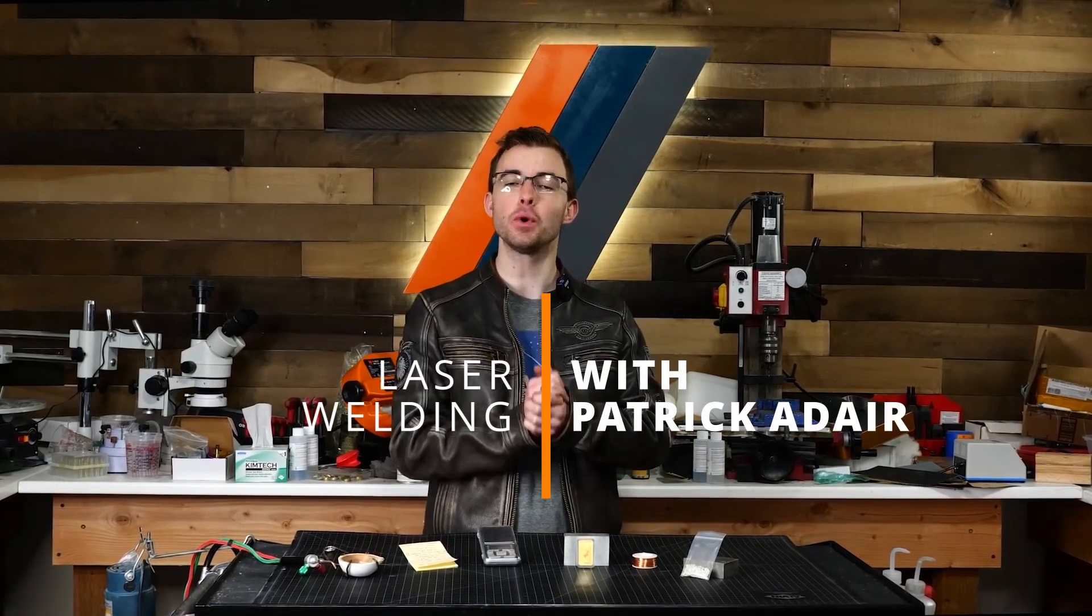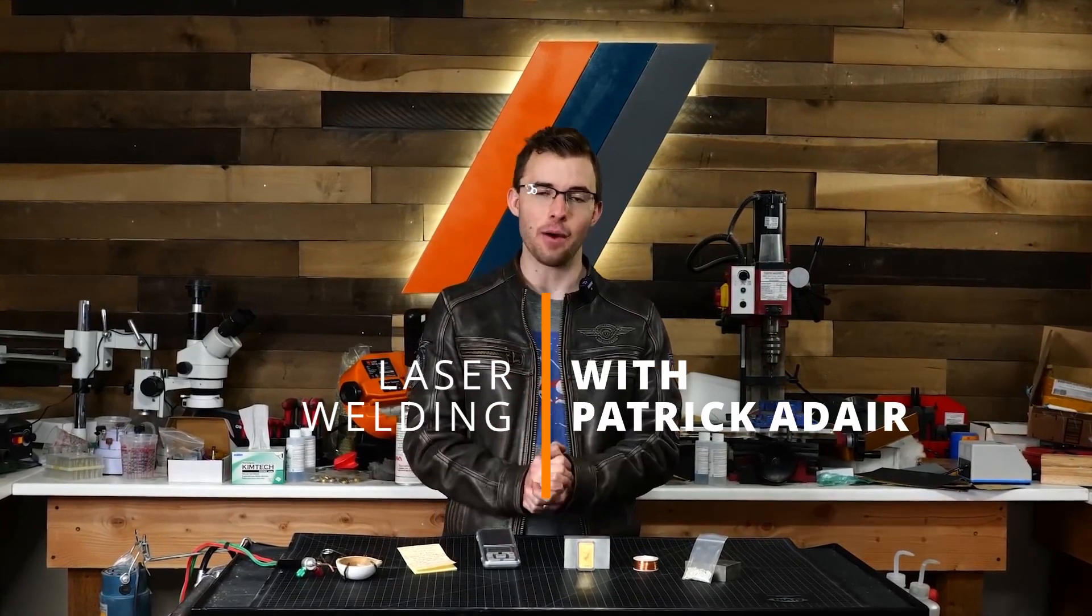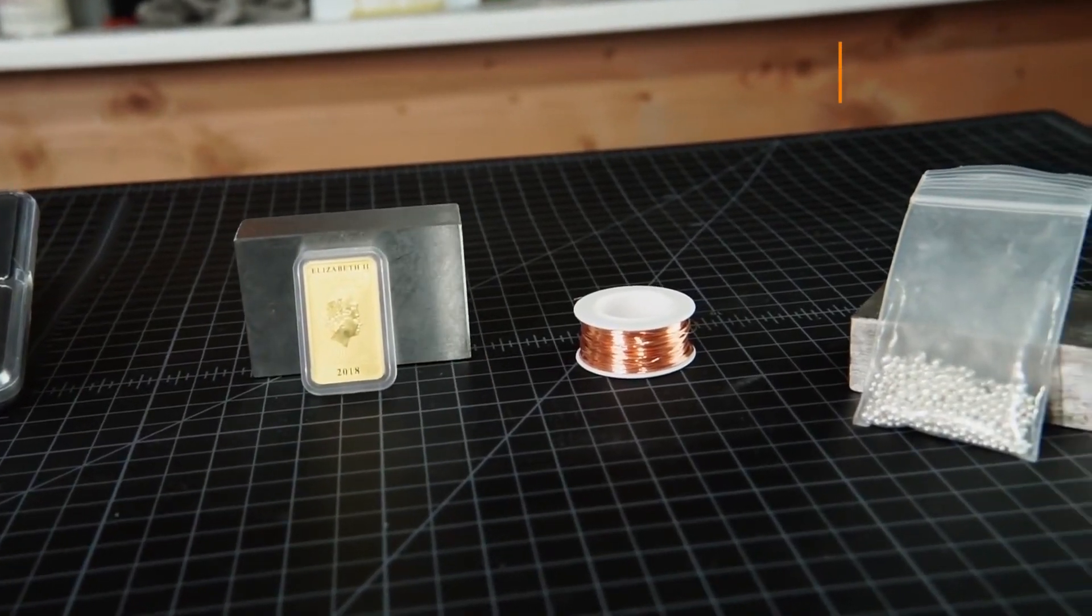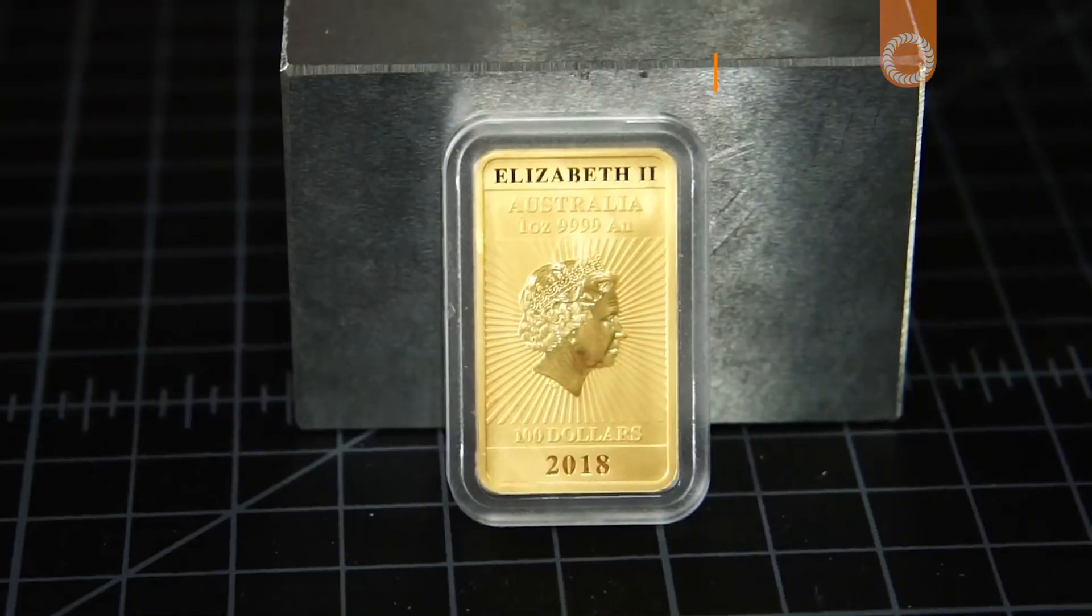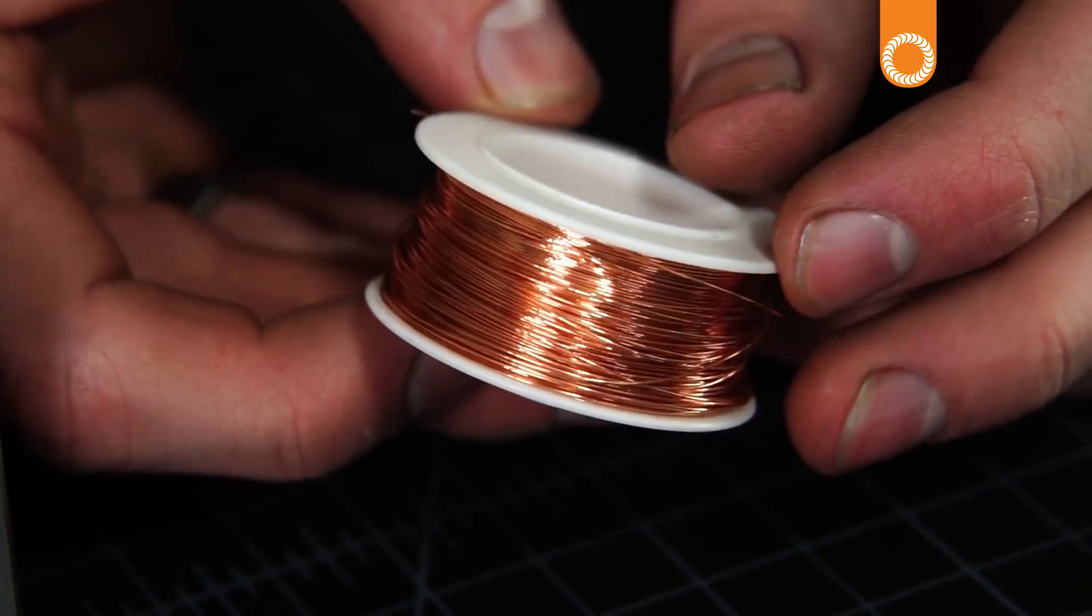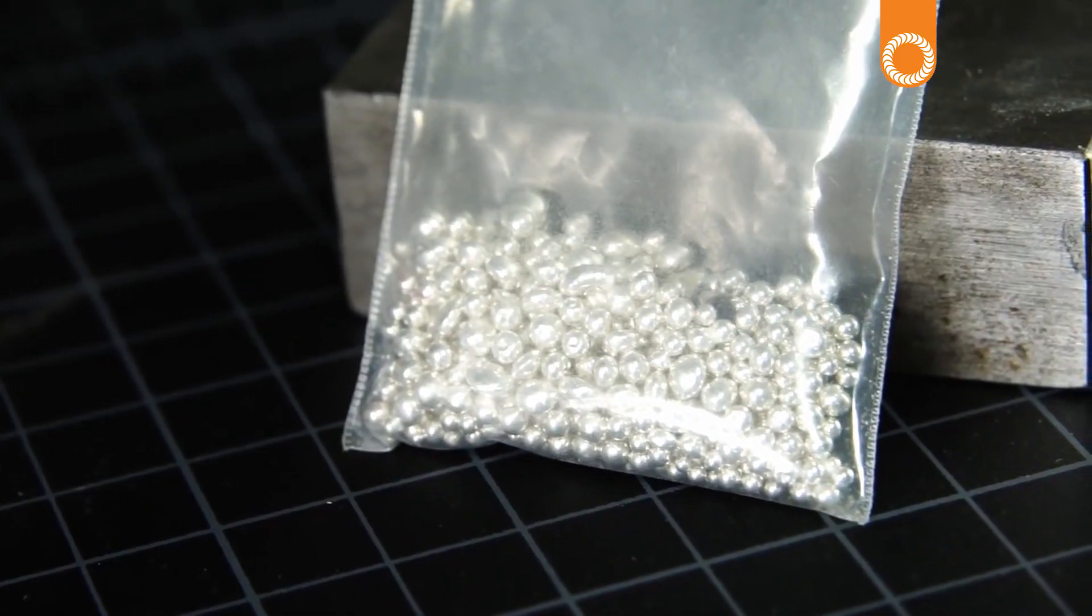Today I'm going to be making a rose gold ring from scratch, and when I say scratch, I mean scratch. We're starting with the basic elemental compounds: pure gold, pure copper, and pure silver. I'm going to be mixing these to make my own alloy of rose gold.